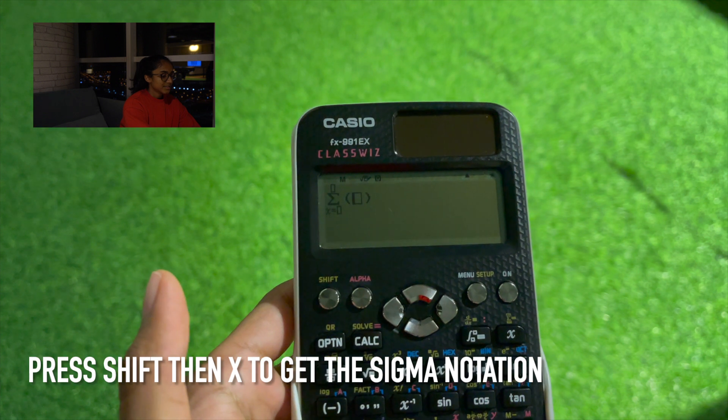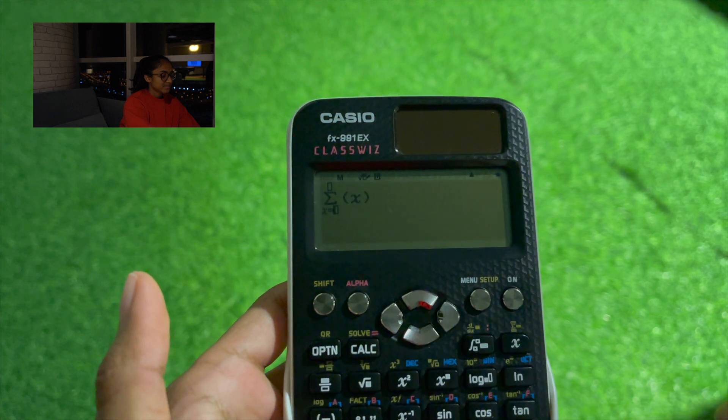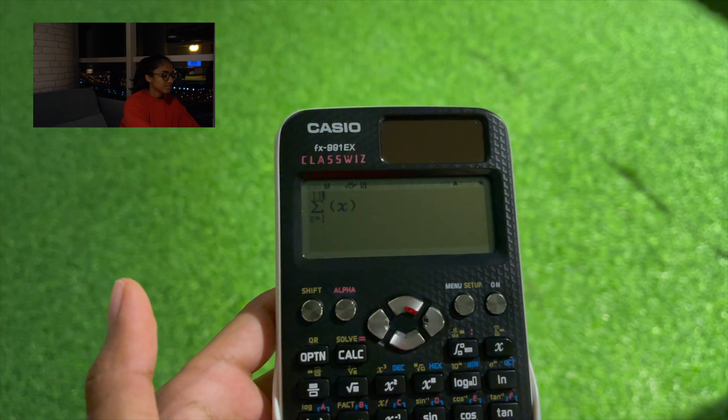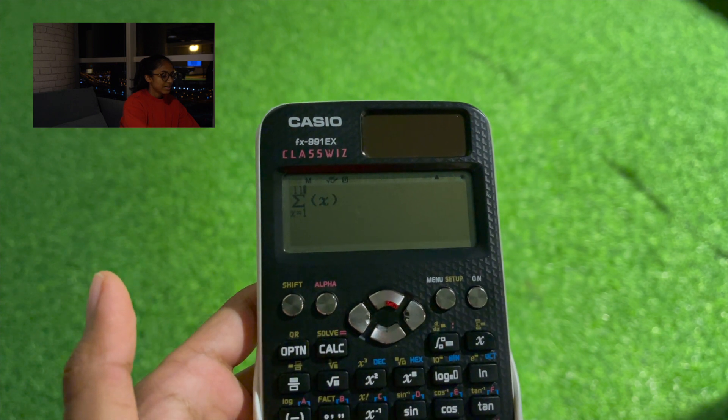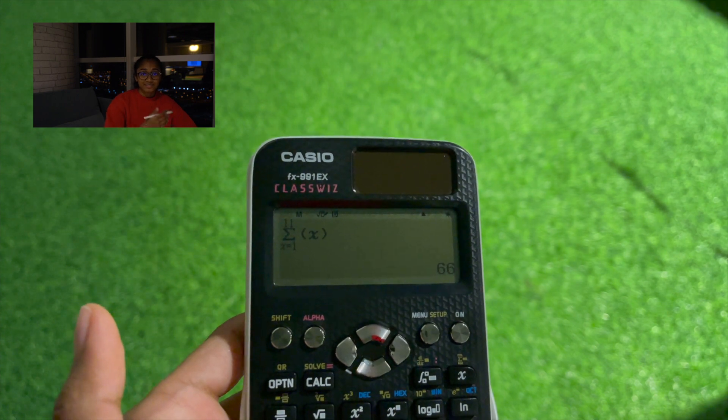So now we're going to actually type it in the calculator. So we get our Sigma notation first. R is going to be represented by X. Our starting value is 1, and our ending value, or upper limit, is 11. And now we press equal, the equal sign, to get the result, which is 66.